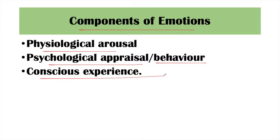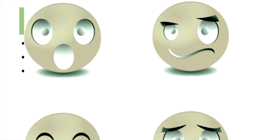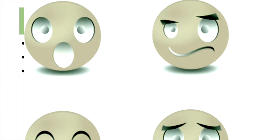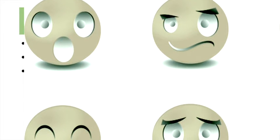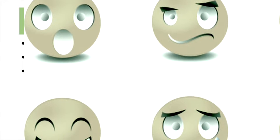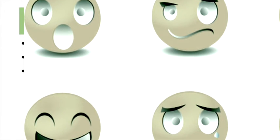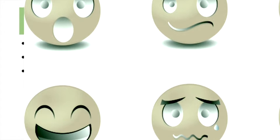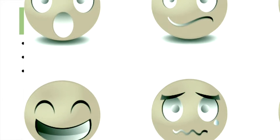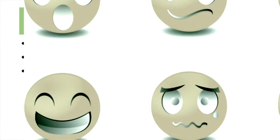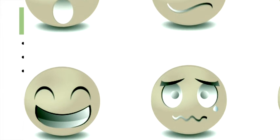Next is our conscious experience. Conscious experience relates to our cognitive abilities. It is how we label our physical and psychological changes. We label that emotion — whether it is fear, nervousness, happiness, or fatigue. So our conscious experience is how we cognitively interpret and label what our body and mind are going through.